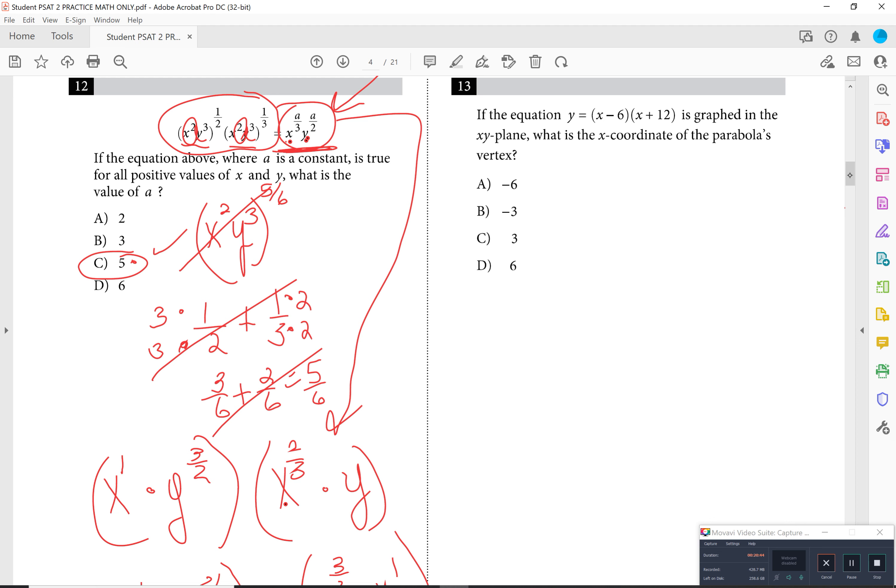Number 13, basically if you FOIL that, you end up with X times X, which is your X squared. So you have Y equals X squared, minus 6X, plus 12X, and this will become negative 72 when you multiply the last terms. Adding those two, you get X squared, plus 6X, minus 72, and Y equals this. The question is asking, what is the X coordinate of the parabola's vertex?